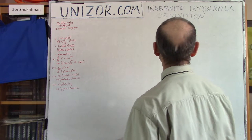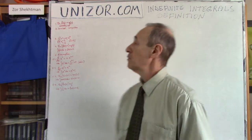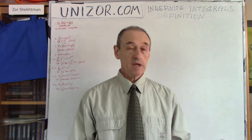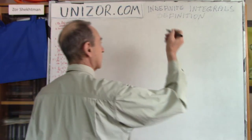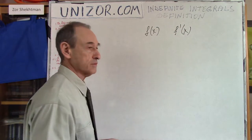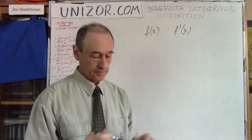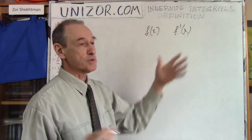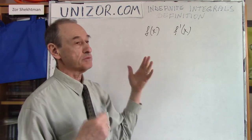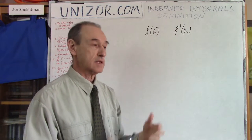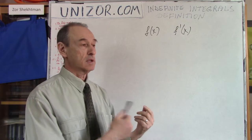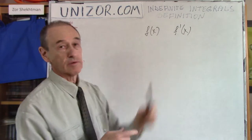Let's talk about the indefinite integral. First of all, let's recall what we did before — we were talking about differentiation. What is differentiation? We took some kind of function and applied the procedure of differentiation to find its derivative. Assuming that we are dealing with smooth functions, it's basically an operation on the set of all functions which can be differentiated — let's call them smooth functions.